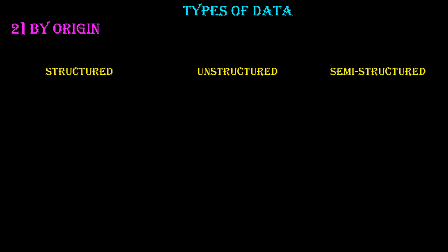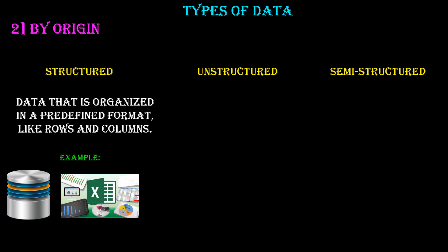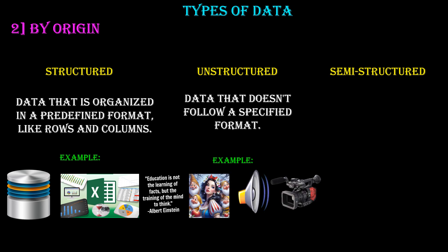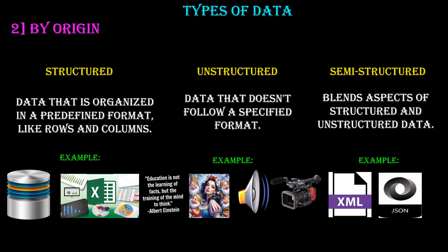By origin, data can be structured, unstructured, or semi-structured. Structured data is organized in a predefined format like rows and columns — well-organized data stored in relational databases or spreadsheets, easily searchable and analyzable. Unstructured data has no predefined format, like text documents, images, audio, and video, and requires specialized techniques for analysis. Semi-structured data blends aspects of both, like XML and JSON files, with both predefined formats and flexible elements.